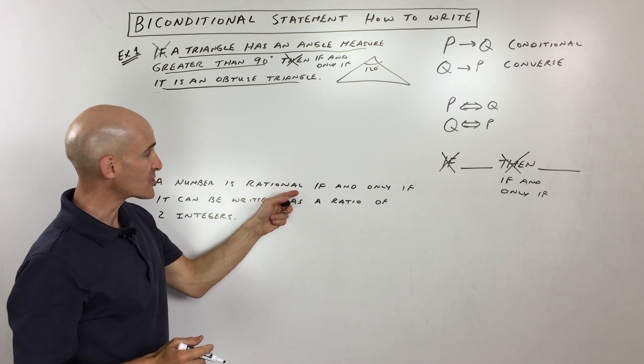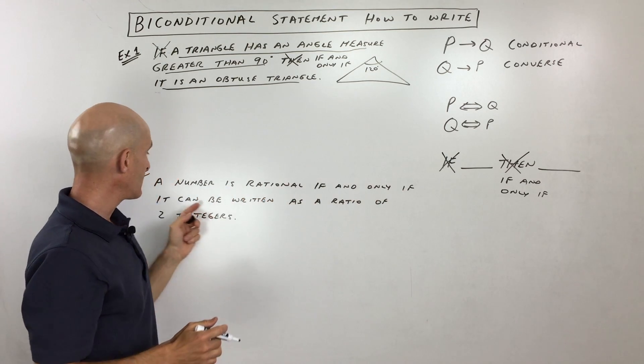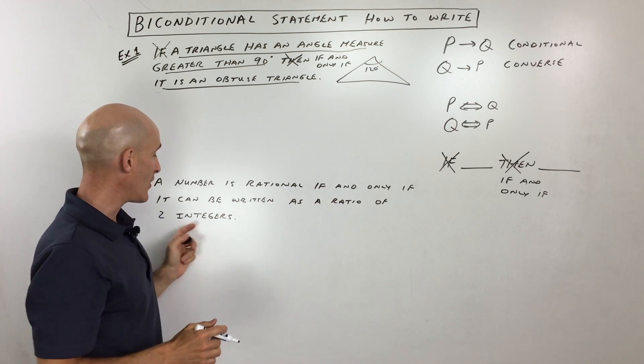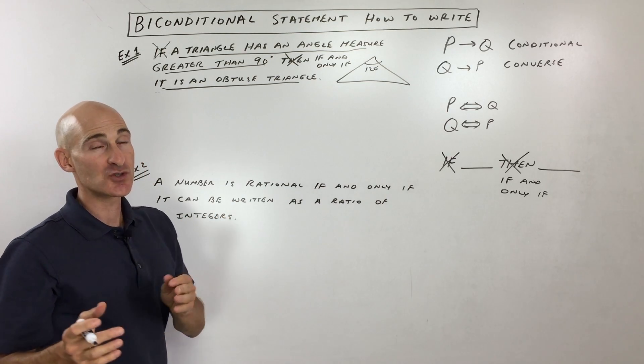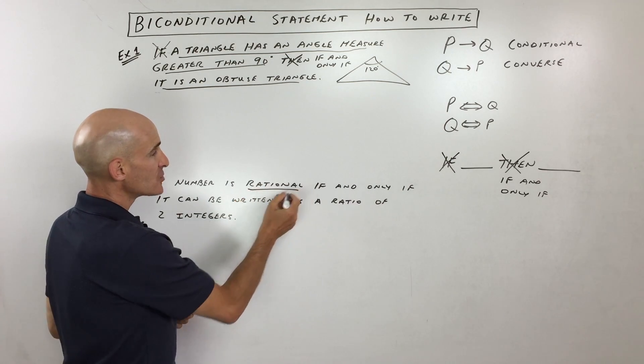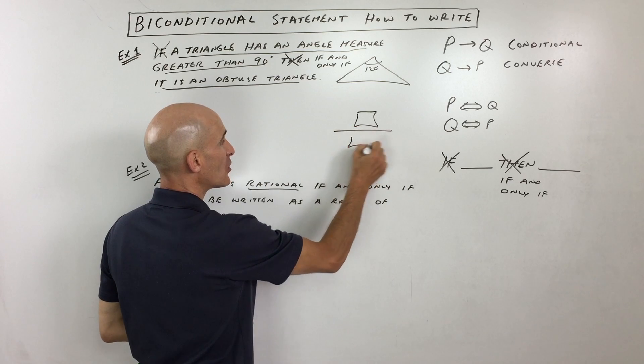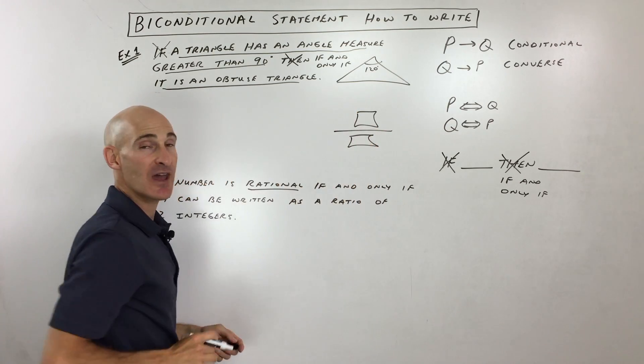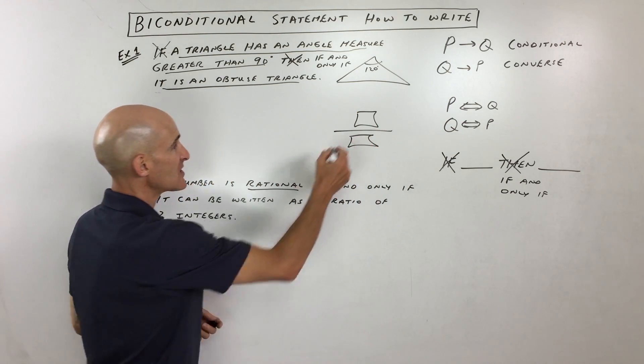It says a number is rational if and only if it can be written as a ratio of two integers. Just a quick review in case you don't know about rational numbers. See this word rational? Rational just means it can be written as a ratio, meaning a fraction of an integer divided by another integer.